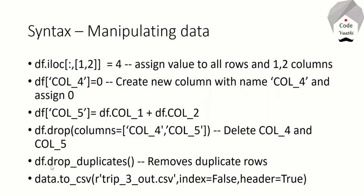Now we have to export a CSV file. The procedure is: df.to_csv with the file name, index=False, and header=True. Header equal to true means the first row entry is column names. We write the data to a CSV file.